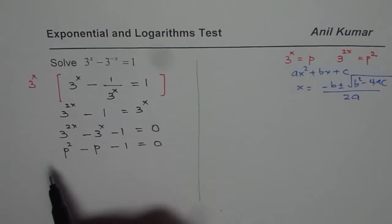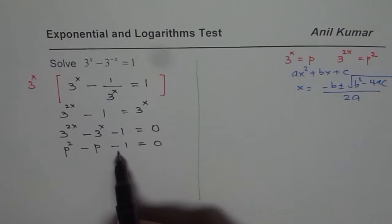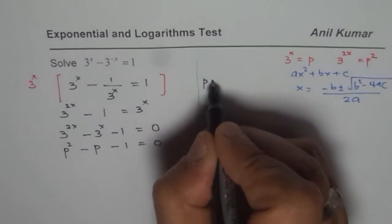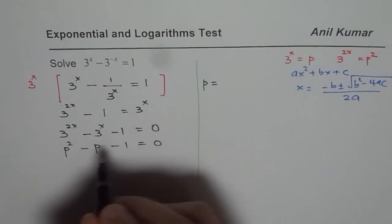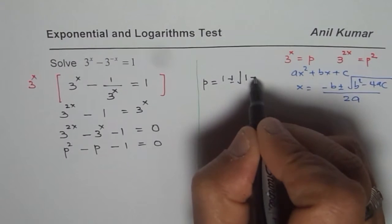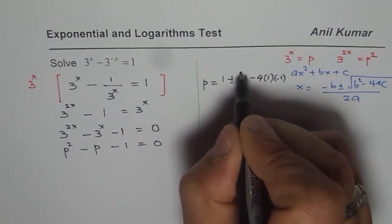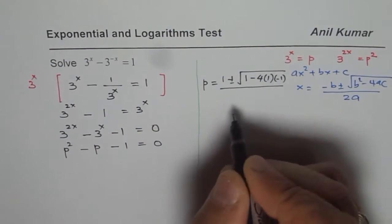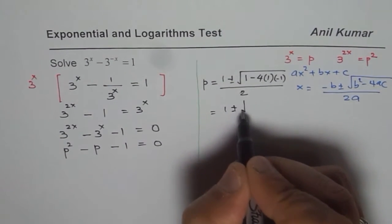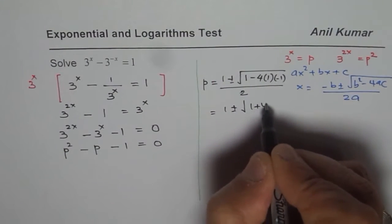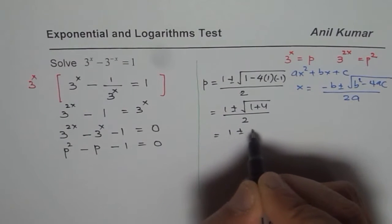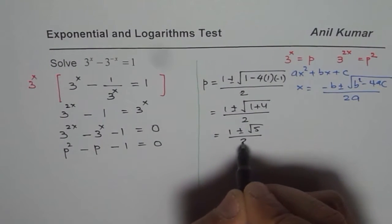Here a, b, and c are 1, minus 1, and minus 1. Our variable is p. So we can write this as p equals to minus (minus 1), that means it becomes 1, plus or minus square root of 1 squared — which is 1 — minus 4 times 1 times minus 1, all over 2a, which is 2. So we get 1 plus or minus square root of 1 plus 4, divided by 2, and that gives us 1 plus or minus square root of 5, divided by 2.